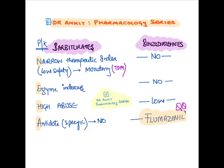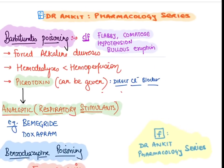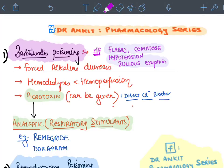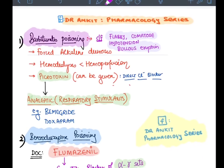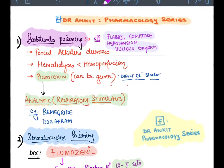In barbiturate poisoning, the patient is flabby (decreased muscle tone), comatose, hypotensive, and has bullous skin eruptions. There is no specific antidote. Since barbiturates are acidic drugs, we perform forced alkaline diuresis and hemodialysis. The non-specific antidote is picrotoxin. The cause of death is respiratory depression, treated with analeptics such as bemegride and doxapram.